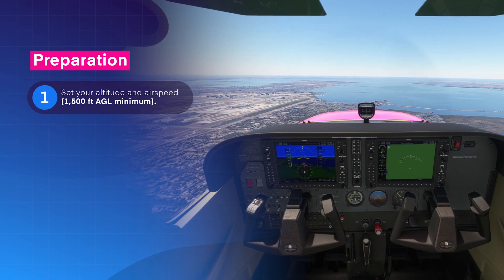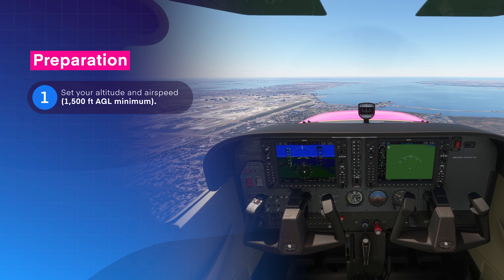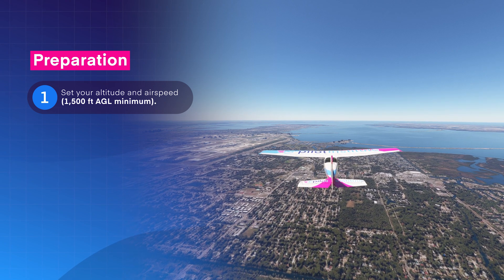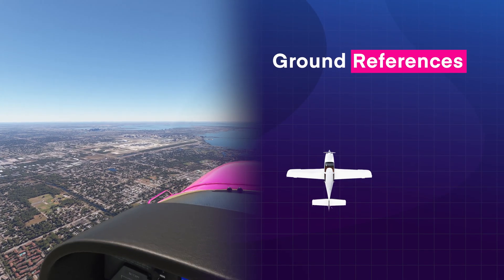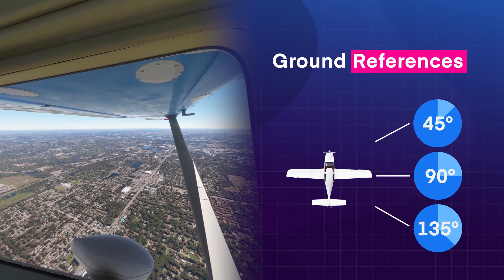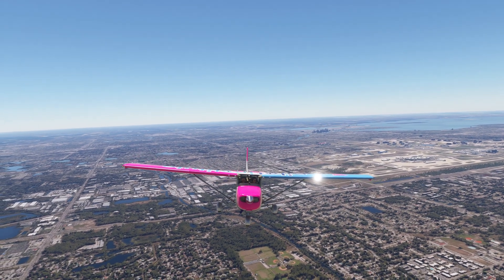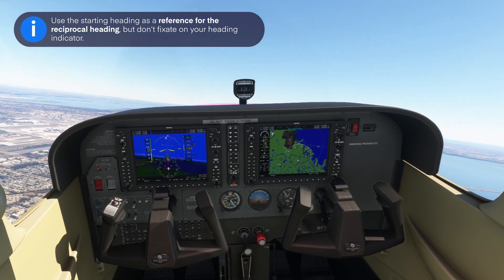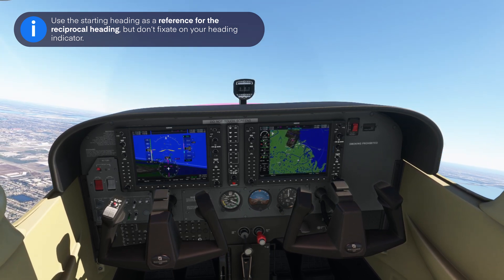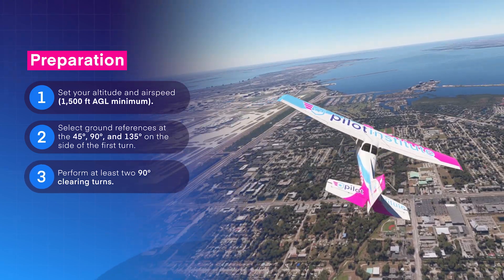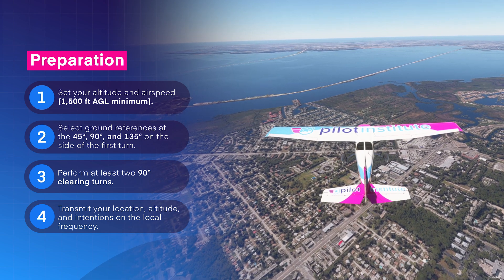Now that you know what to watch for, it's time to prepare for the maneuver. First, set your altitude and airspeed — the minimum altitude is 1,500 feet above ground level. Ensure you know the appropriate airspeed; Lazy-8s are typically flown at cruise power settings below maneuvering speed. Next, select your visual reference points at the 45, 90, and 135 degree positions on the side of the first turn. They should be far enough away that their position remains fixed relative to the airplane. Choosing a visual reference from the 180-degree point is tricky since it's actually right behind you — use the starting heading as a reference for the reciprocal heading, but don't fixate on your heading indicator. Now scan for traffic by performing at least two 90-degree clearing turns, and make a radio call transmitting your location, altitude, and intentions on the local frequency.